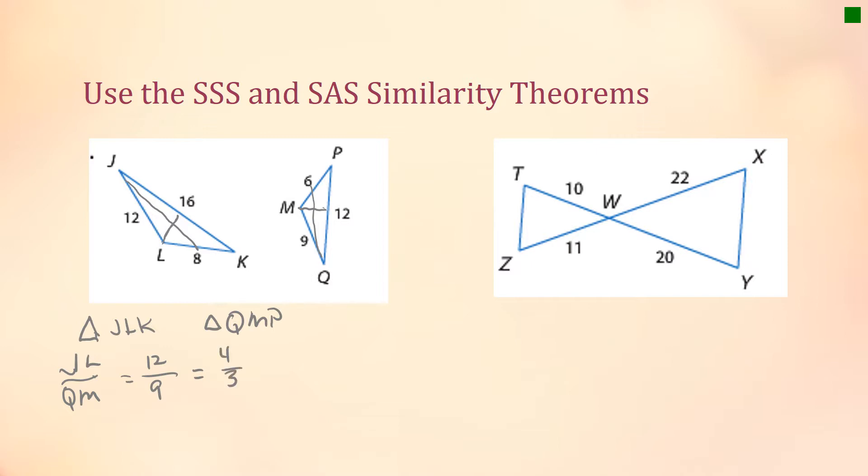Let's look now at LK to MP. LK is 8, and MP is 6. Both of those are divisible by 2. Again, that's 4 over 3.